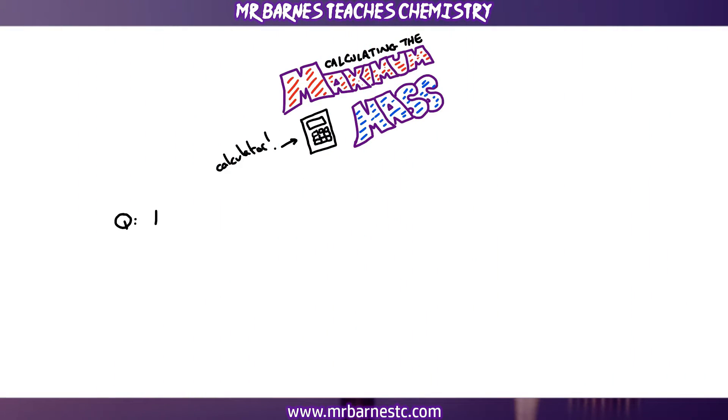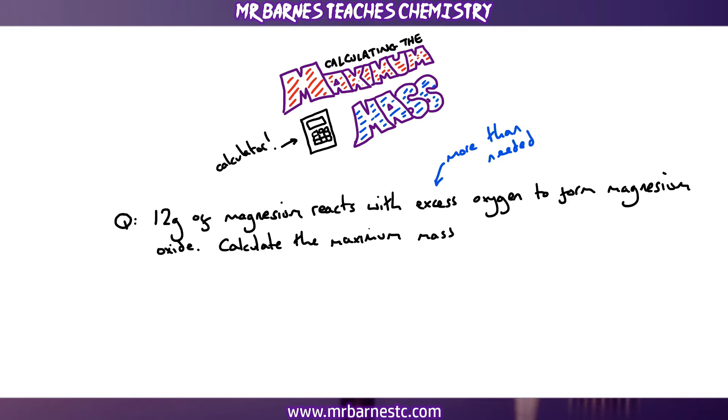The best way to be able to do that is to have a look at a worked example. So I've got a question here that says 12 grams of magnesium reacts with excess oxygen. Excess means more than needed, so we've got more than enough. And it forms magnesium oxide and you're asked to calculate the maximum mass of magnesium oxide formed.